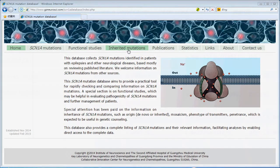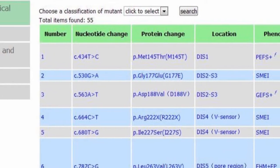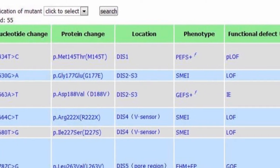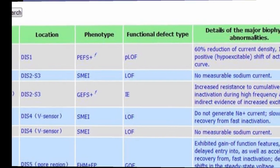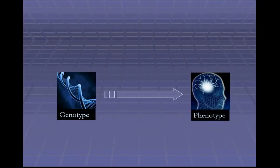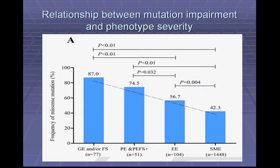Based on information from this database, we analyzed the relationships among genotype, functional alteration, and phenotype. From a genotype-phenotype point of view, we used the missense mutation, which does not cause gross protein malformation, as an index. It was found that mild phenotypes were more frequently associated with missense mutations, suggesting correlations between impairment and pathogenicity.